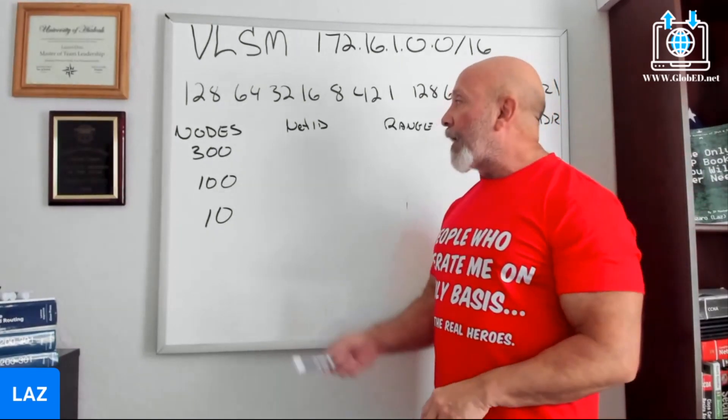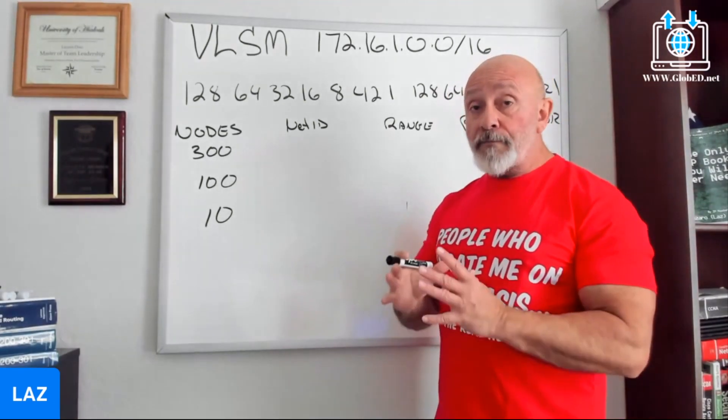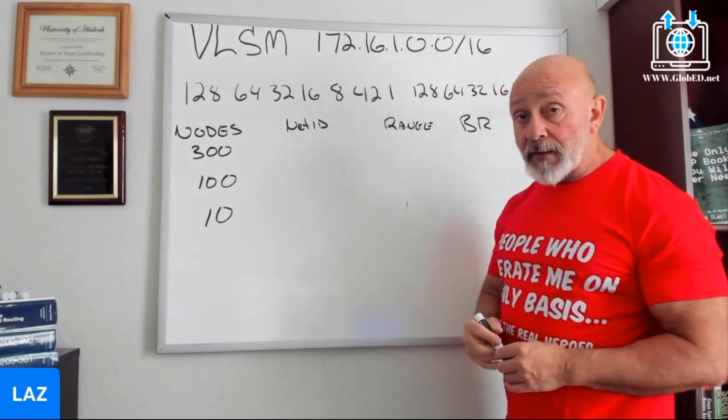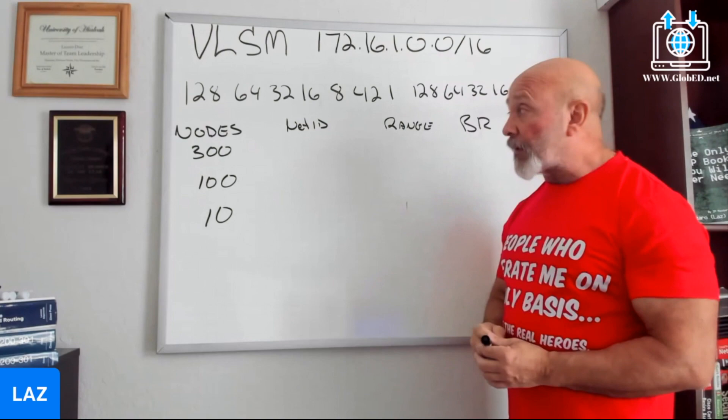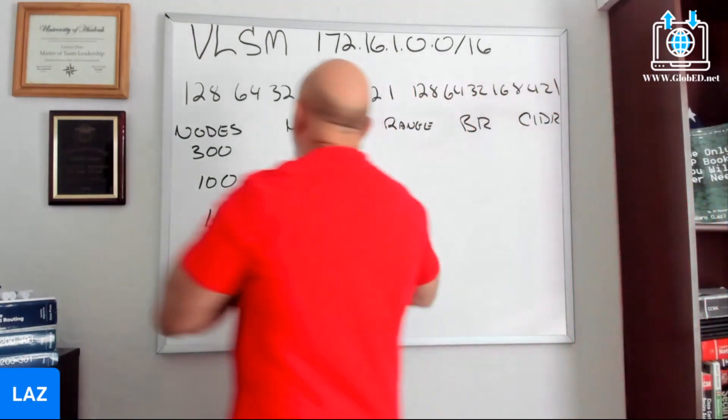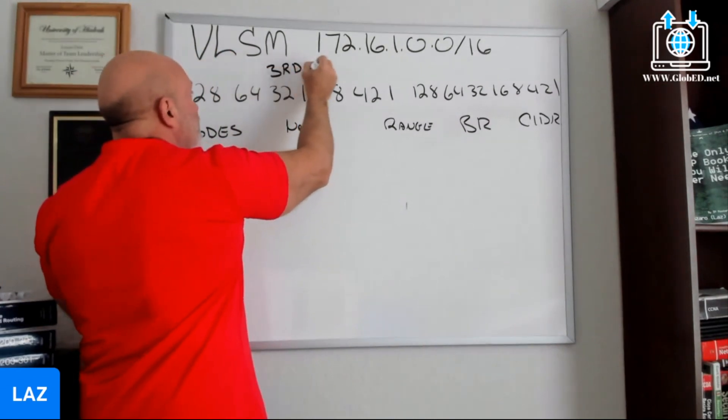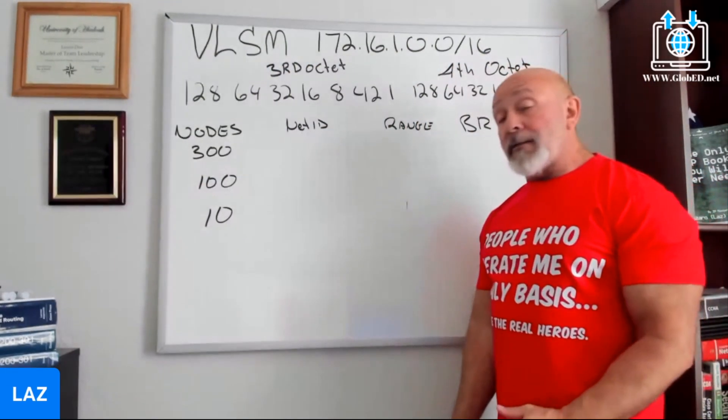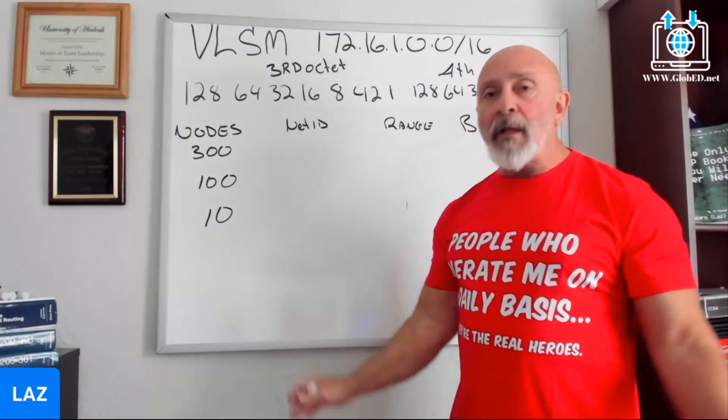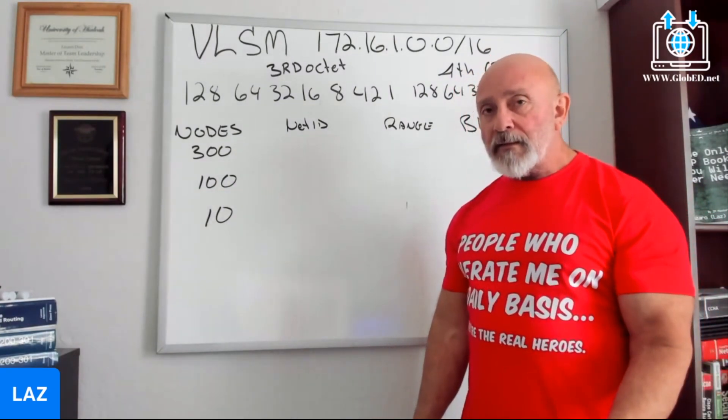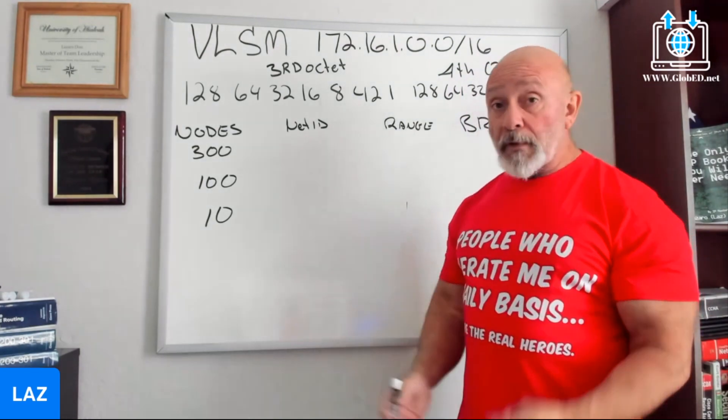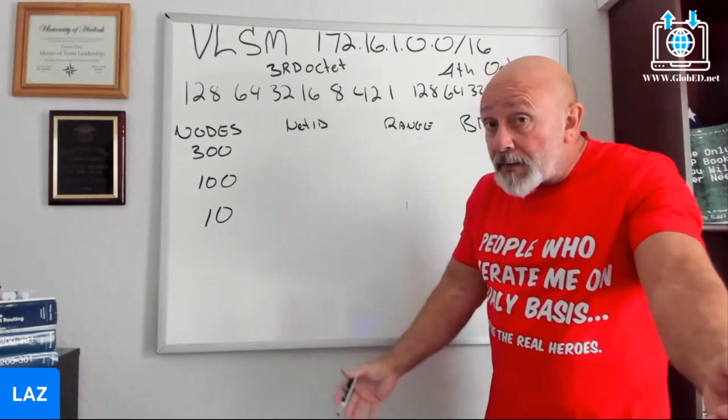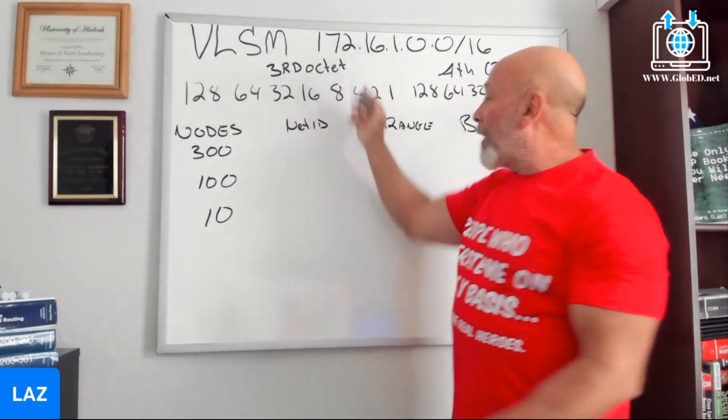So you start first from your starting point - 172.16.1.0. That is your zero network, your starting point. This represents over here the third octet, this over here represents the fourth octet. Listen, you can Google all you want, there's a million ways to do this. If you do it this way, it's the easiest way. You'll do it quick, you can do it in your head sometimes.